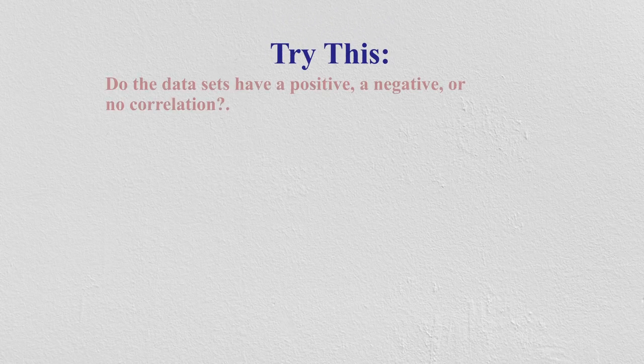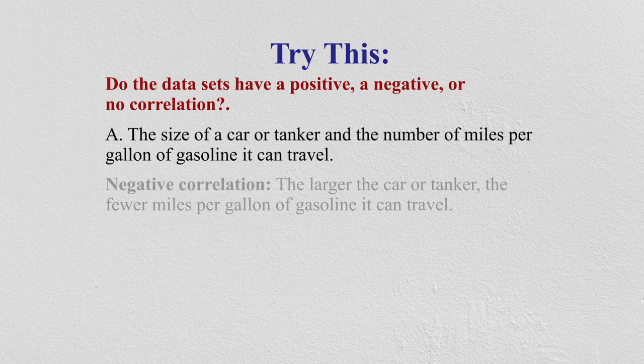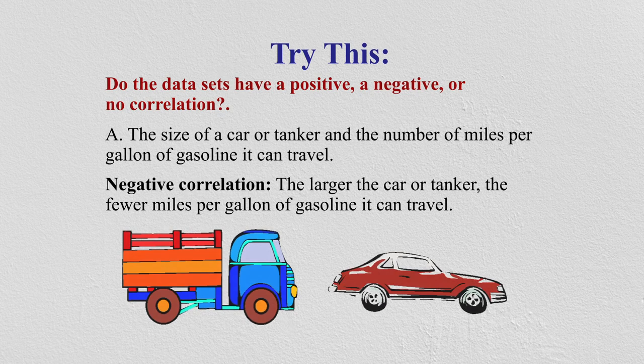We have some more good examples. Do the data sets have a positive, negative, or no correlation? Take the example of the size of a car or tanker and the number of miles per gallon of gasoline it can travel. This would be a negative correlation — the larger the car or tanker, the fewer miles per gallon it can travel.